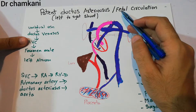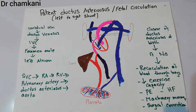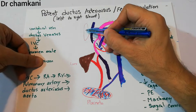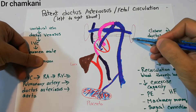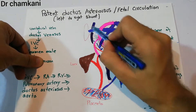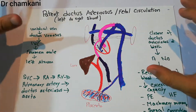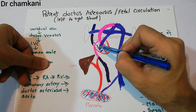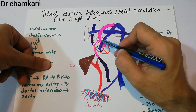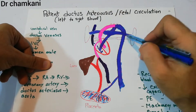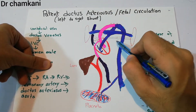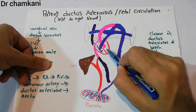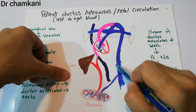Before birth, when the baby is in the mother's womb and cannot breathe, the lungs of the baby are basically collapsed. Blood cannot go into the lungs, and the baby is taking oxygenated blood from the mother. Normally, blood comes to the right atrium, goes into the right ventricle, then into the lungs to get oxygenated, returns to the left atrium, then the left ventricle pumps it to the whole body.